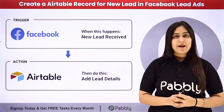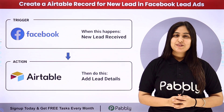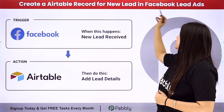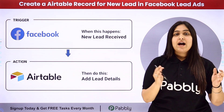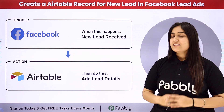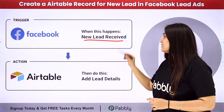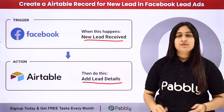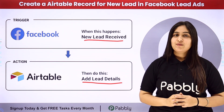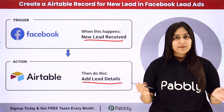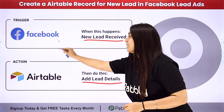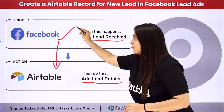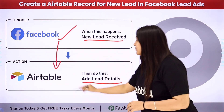Hello everyone, welcome back to Pabbly. In this video we are going to learn how to create an Airtable record for a new lead in Facebook Lead Ads. I am running a Facebook ad, and whenever a new lead is received, the details of that lead should be automatically added in my Airtable. To automate this process, we will use an automation software named Pabbly Connect, in which we need to connect our trigger and our action. Our trigger application will be Facebook Lead Ads and the action application will be Airtable.